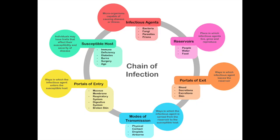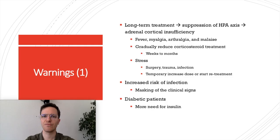For contraindications, prednisolone has only two: gastrointestinal ulcer and acute infections. You do not want to suppress your immune system by taking prednisolone if you have an acute infection, so this makes sense.